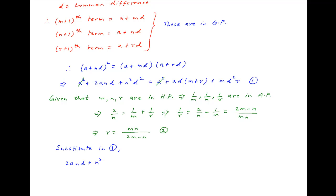Substituting the value of r from Result 2 into Result 1, we get 2and plus n squared d squared on the left-hand side equal to ad times [m plus mn divided by (2m minus n)] plus md squared times [mn divided by (2m minus n)] on the right-hand side.